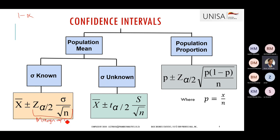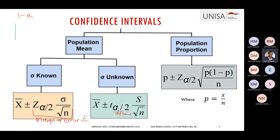If they ask you to calculate the margin of error, it's the critical value times the standard error. If the population standard deviation is unknown — they give you sample statistics — we use the sample mean plus or minus the critical value. That critical value is found using alpha divided by 2 and degrees of freedom (n minus 1), from the T table using the upper tail probabilities running down on the left.